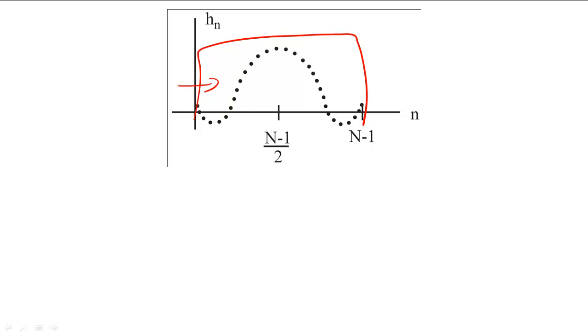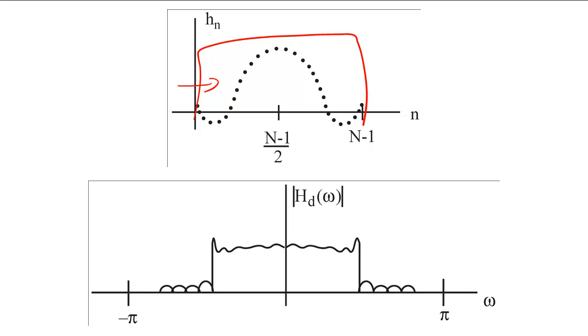If we truncate the filter coefficients to N samples with a rectangular window, then the frequency response of the filter will develop a set of ripples. These ripples lower the resolution of the system, so we want to reduce the height and width of these ripples as much as possible.